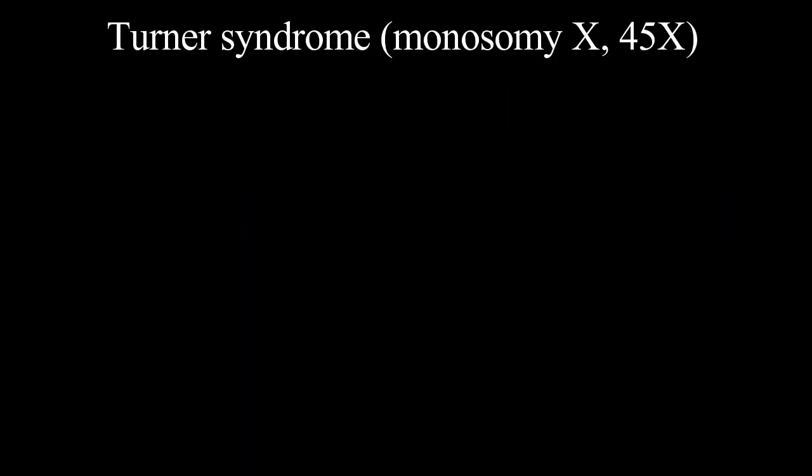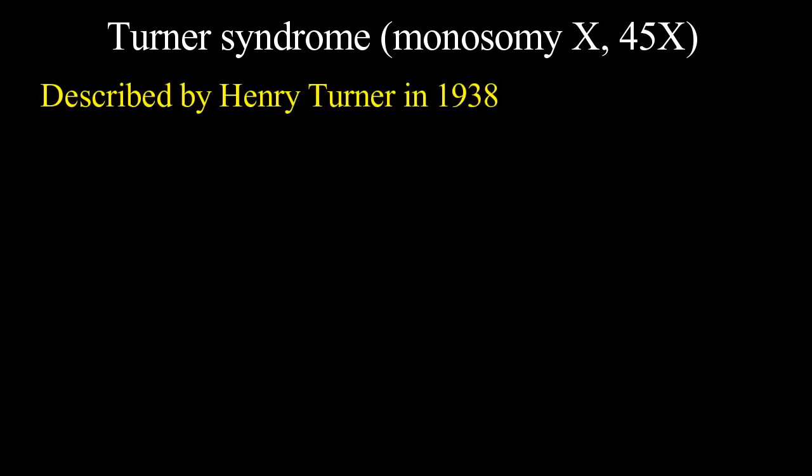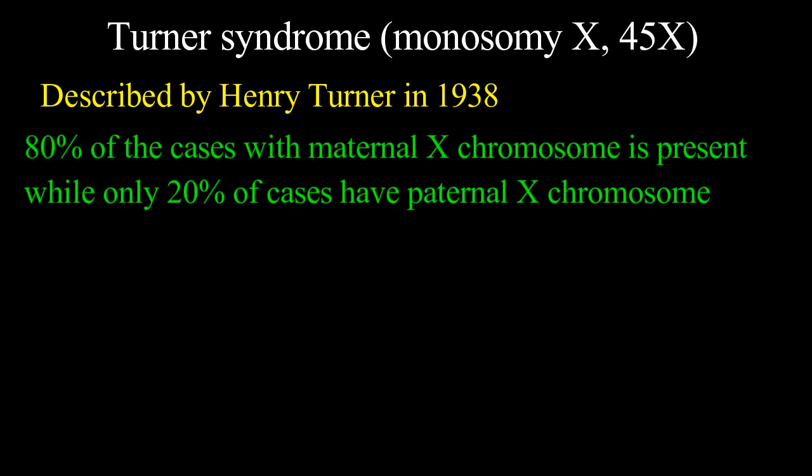Turner syndrome — monosomy X, 45X — was described by Henry Turner in 1938. About 80% of cases with Turner syndrome have the maternal X chromosome present, while only 20% of cases have the paternal X chromosome; that is, the majority of cases show loss of the paternal X chromosome.